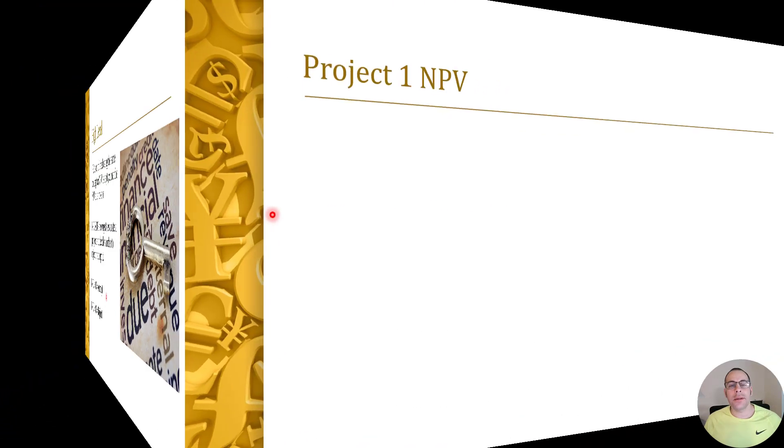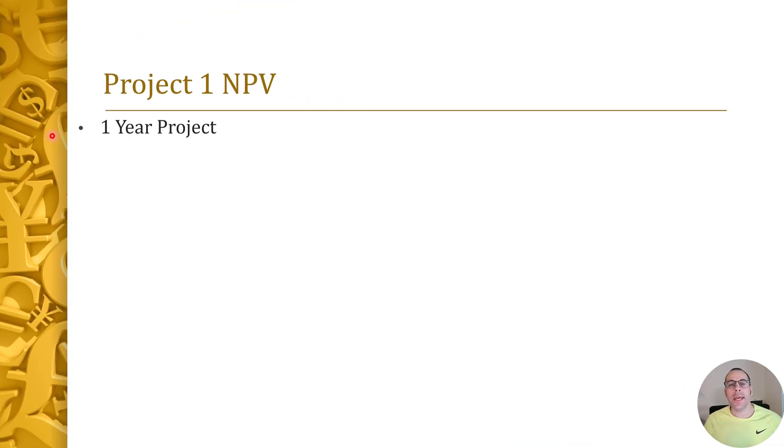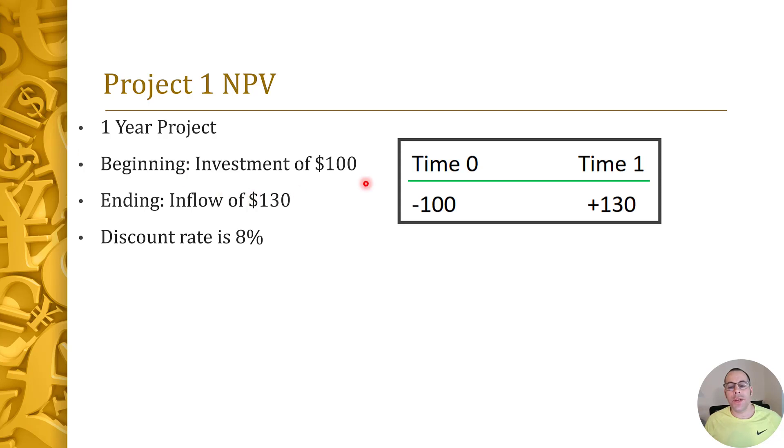So let's look at project number one and we're going to calculate the NPV of this one-year project. We need to invest $100 and then after one year we'll receive $130. The discount rate is going to be eight percent. So here's a little visual: at time zero it's an outflow of $100, at time one, which is one year, it's an inflow of $130.